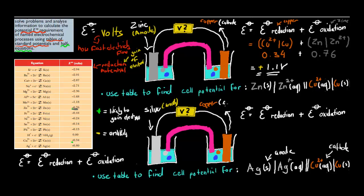Now we have to follow the same procedure. For reduction, which occurs at the cathode, we write the copper equation the same as before: copper ions (Cu²⁺) going into elemental copper, meaning copper has gained two electrons, so its oxidation number has been reduced from 2+ to 0 — hence reduction. For oxidation, silver has to give electrons, so it goes from Ag elemental (oxidation number 0) into Ag⁺ ion (oxidation number 1) — so it's been oxidized, or it's given away an electron.